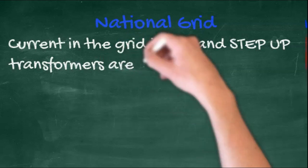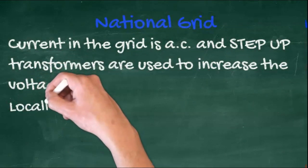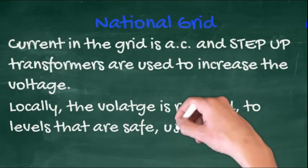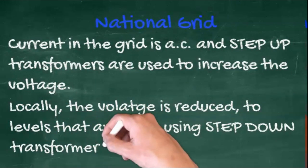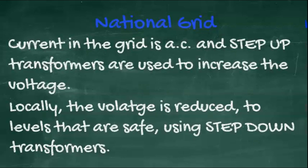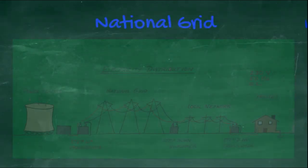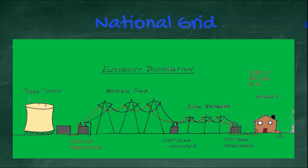Current in the grid is AC alternating, and step-up transformers are used to increase the voltage. Locally, the voltage is again reduced to levels that are safe using step-down transformers. A quick picture showing how step-up and step-down transformers are used.